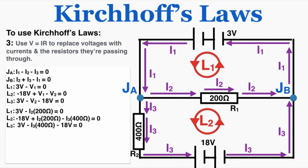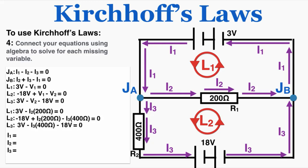Step 4: use algebra to connect the equations and solve for each missing variable. We now have five equations — L1, L2, L3, and the two junction equations JA and JB. Solving gives I2 = 0.015 A, I3 = −0.0375 A, and I1 = −0.0225 A. Start with L1 to find I2, plug I2 into L2 to find I3, then plug I3 into a junction equation to find I1.